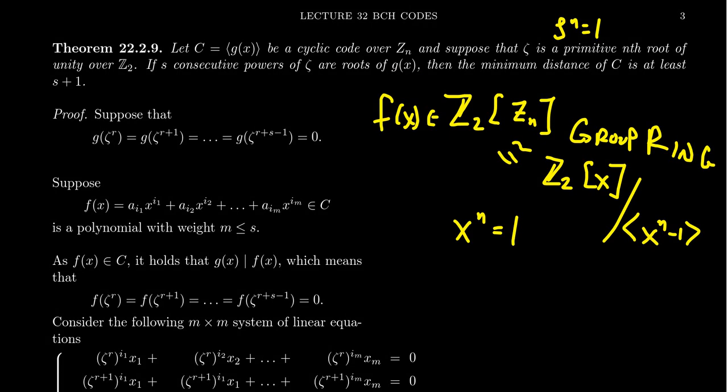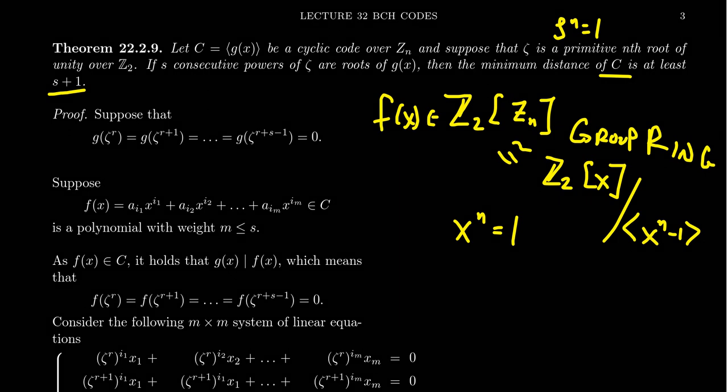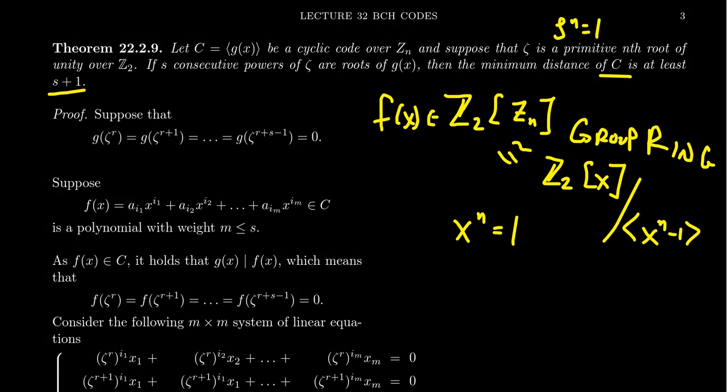In that situation, it turns out that the minimum distance of our cyclic code C is at least S + 1. So if we can guarantee that G has many consecutive roots of unity, that can guarantee our code has a large minimum distance, which is the tool we use to measure how good our code is at error correction, error detection, and things like that.